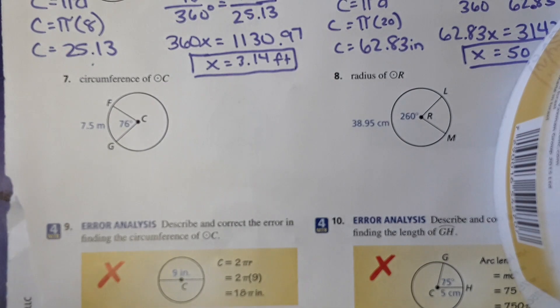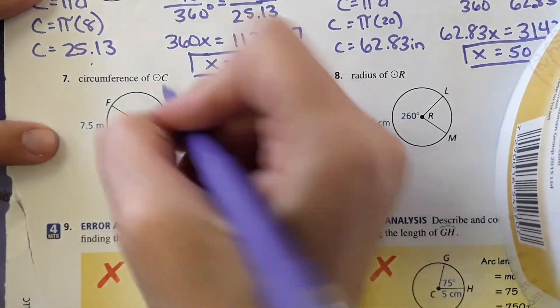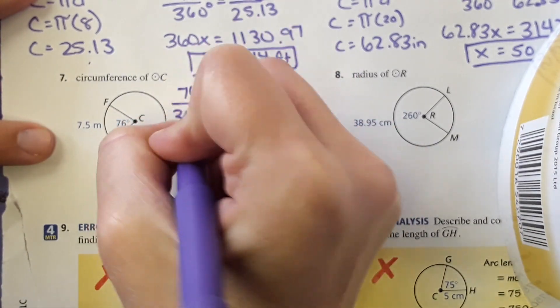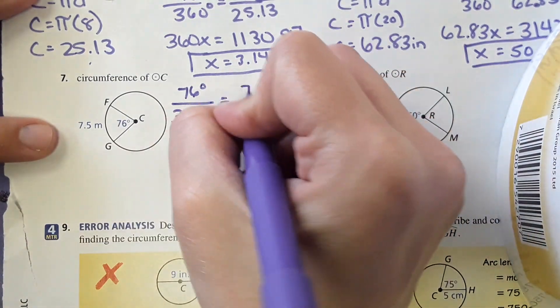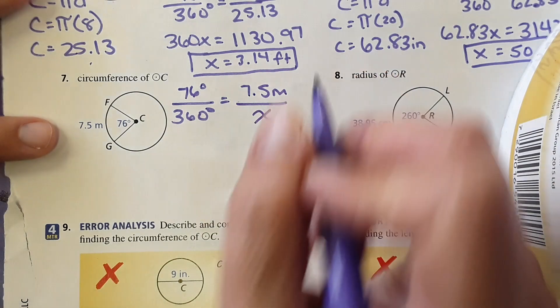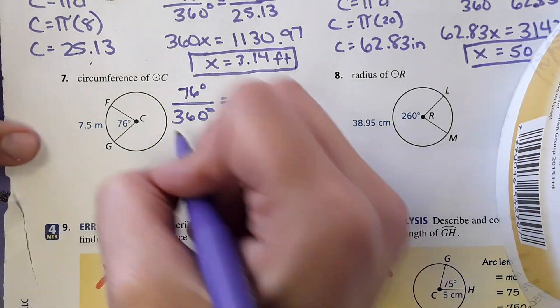Next one, number seven, same idea, just they'll be asking for a different thing each time. This time it wants the circumference. So what did they give us? They gave us seventy-six degrees over 360 degrees equals this segment is seven point five meters. And they want to know the entire circumference. So we'll call that x. Then we can cross multiply.